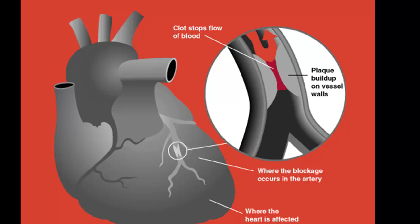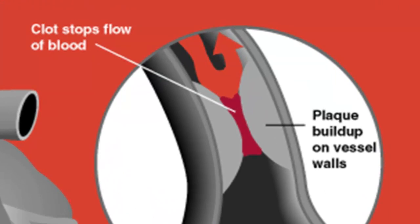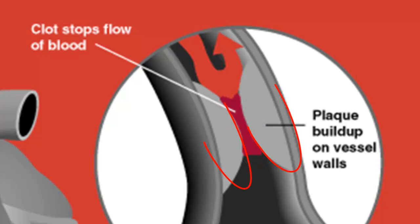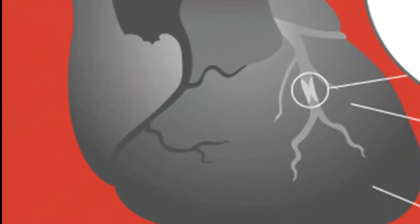Let's examine what happens when erosion of a plaque occurs in a coronary artery. When there is erosion of a plaque, the body reacts just as it would to any other trauma, and a clot forms. Keep in mind, the artery is already narrowed due to cholesterol buildup. Now, in addition to a plaque obstruction, we also have a clot. This results in very little blood flowing through the artery. The result? The heart tissue does not get enough blood, and that tissue dies. This is called a myocardial infarction, or what is better known as a heart attack.